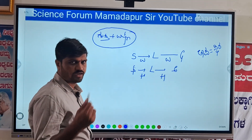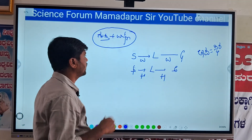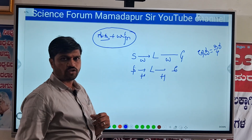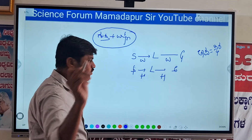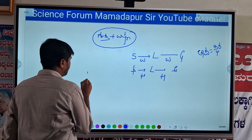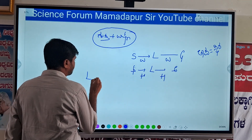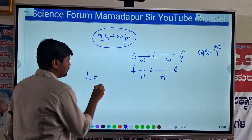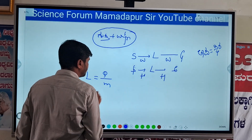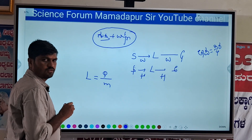So have you understood latent heat? The formula for latent heat: latent heat is denoted by capital L, and the formula is L equals Q divided by M.